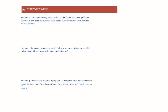Let's take examples to see how these concepts are applied. Example one: a restaurant serves five varieties of soups, eight different salads, and four different desserts. In how many ways can one make a meal if one chooses one soup, one salad, and one dessert? I have to choose a soup AND a salad AND a dessert. I have five soup varieties, eight salad varieties, and four dessert options, so the total number of ways is 5 × 8 × 4.